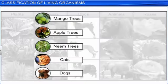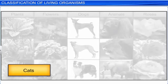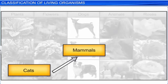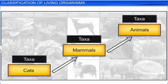The scientific term given for these categories is taxa. Each of the groups, namely mango trees, apple trees, neem trees, cats and dogs, are all taxa. However, a cat is a mammal, and all mammals come under animals. Therefore, a cat, mammals, and animals represent taxa at different levels. This process of classifying living organisms into different taxa based on their characteristics is called taxonomy.